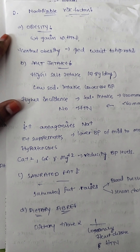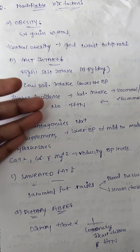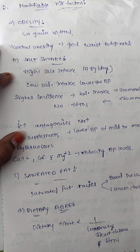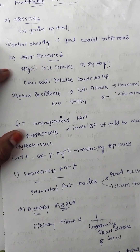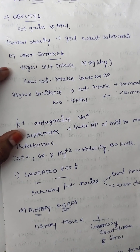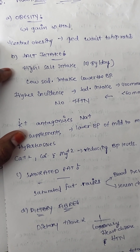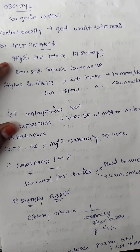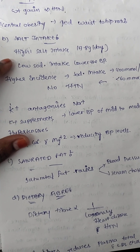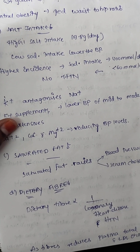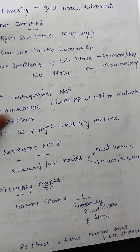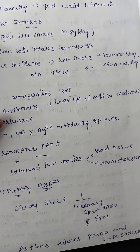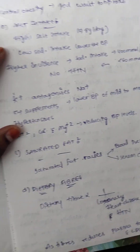Modifiable risk factors include obesity — weight gain is directly proportional to hypertension. Lipids cause a rise in blood pressure. Central obesity, which is an increased waist-to-hip ratio, increases the risk of getting hypertension. Salt intake: higher salt intake of 7 to 8 grams per day increases risk; we recommend 5 grams per day or less. Low sodium intake lowers BP. Sodium intake of 400 millimoles per day poses higher risk; less than 60 millimoles per day means no hypertension.